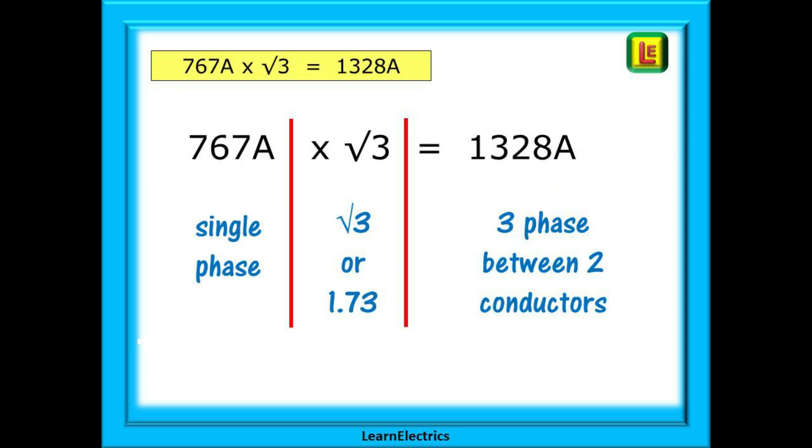The regulations book tells us that to arrive at a three phase fault current, we should multiply the single phase line to neutral current value by root 3. We have just measured what it will be at 230 volts. Now we want to know what the fault current will be at 400 volts. So 767 amps multiplied by root 3, or 1.73, will come to 1328 amps. This is our fault current if there's a short between two phase conductors in a three phase system in this example.